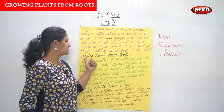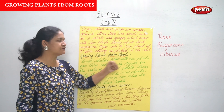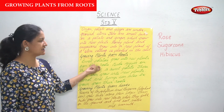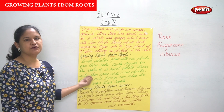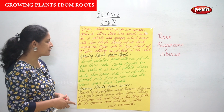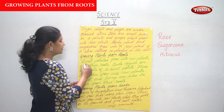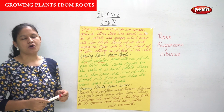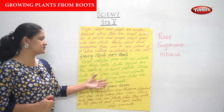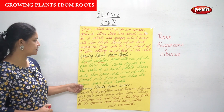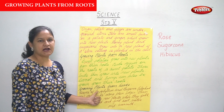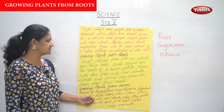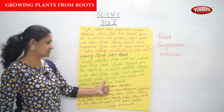Next we are seeing growing plants from roots. Sweet potatoes grow into new plants from their roots — buds appear on the roots of a sweet potato and these buds then grow into new plants.